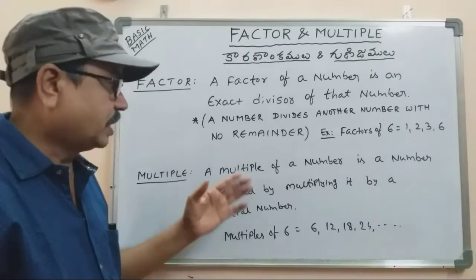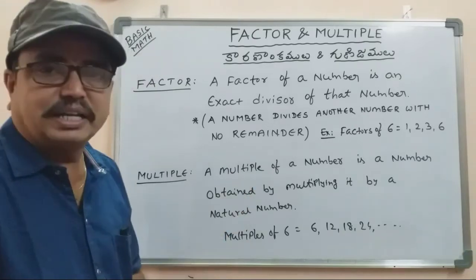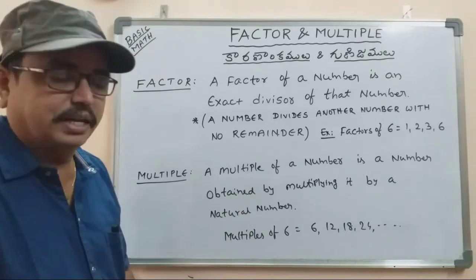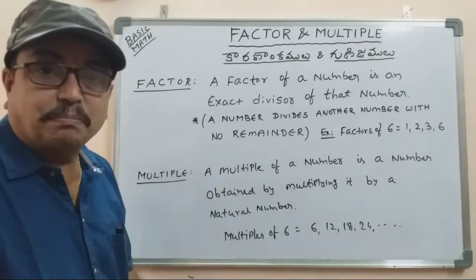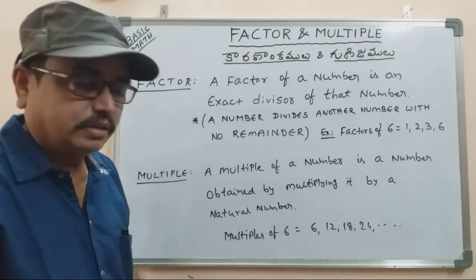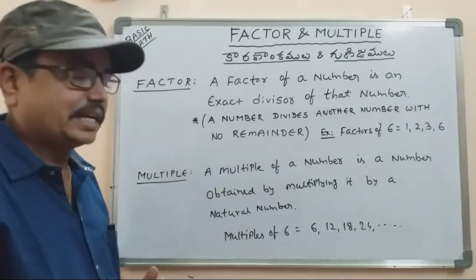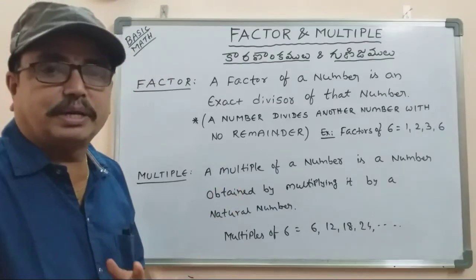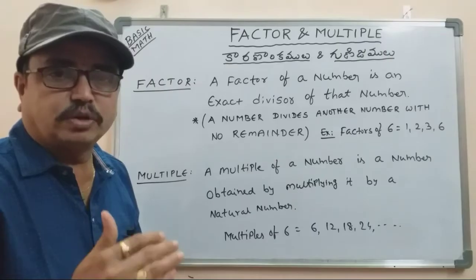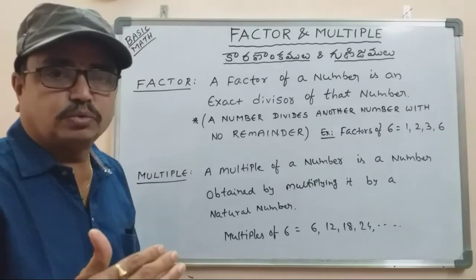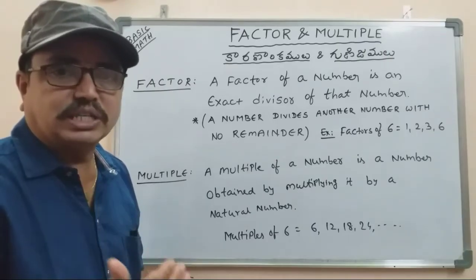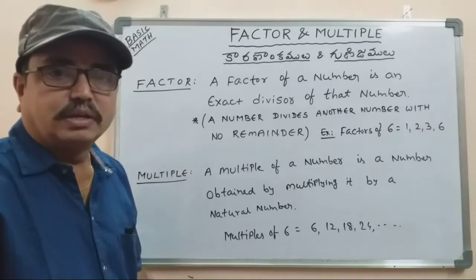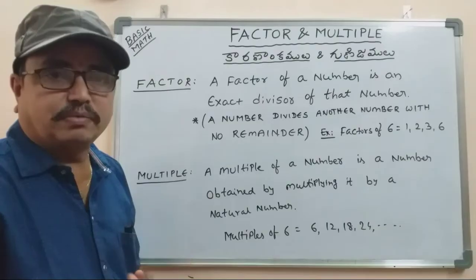A multiple of a number is a number obtained by multiplying it by a natural number. For example, multiples of 2 are: 2 times 1 is 2, 2 times 2 is 4, 2 times 3 is 6, and so on.